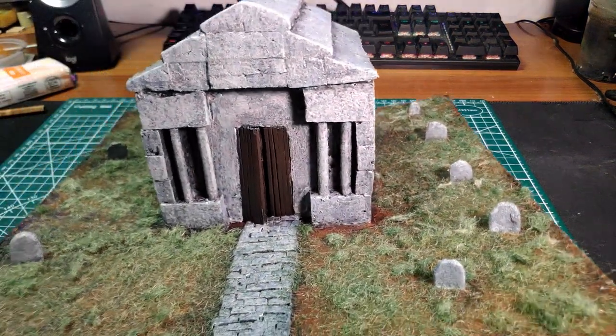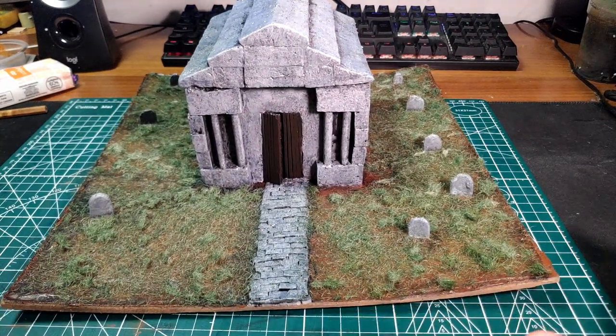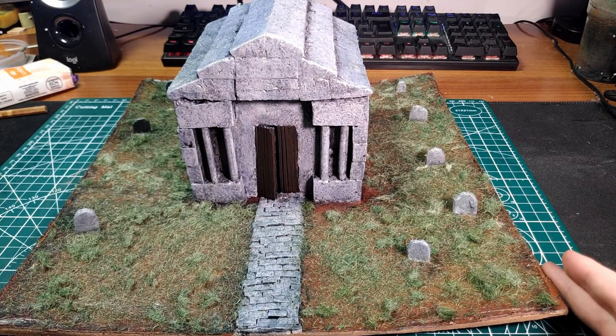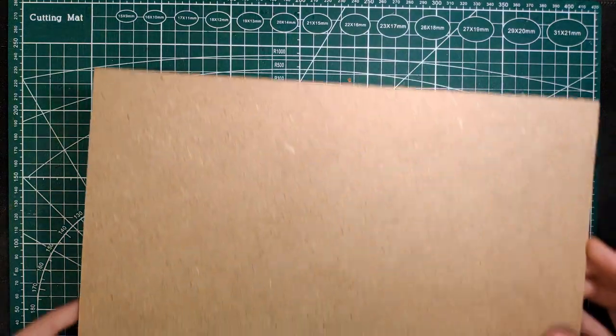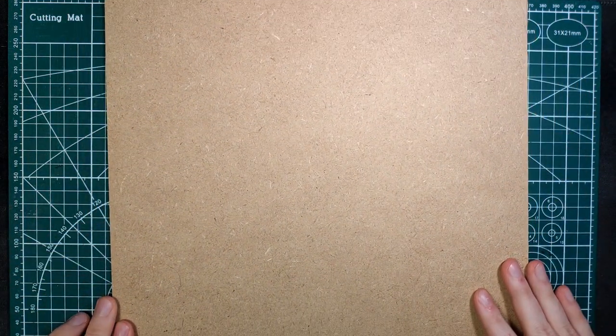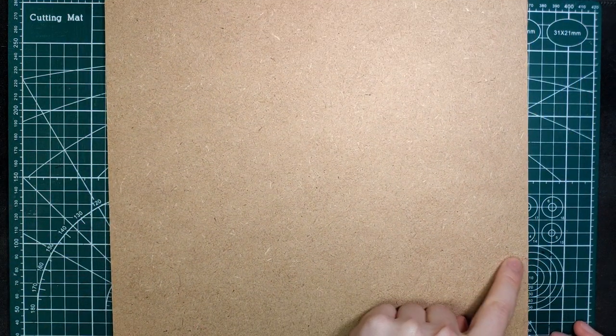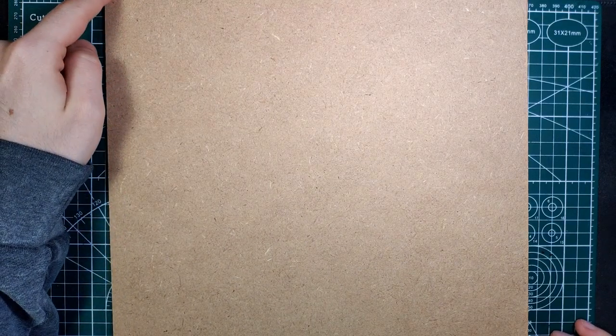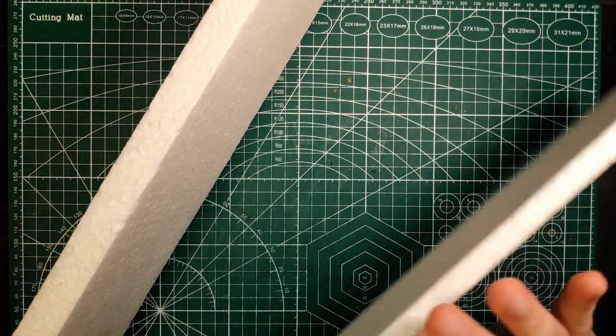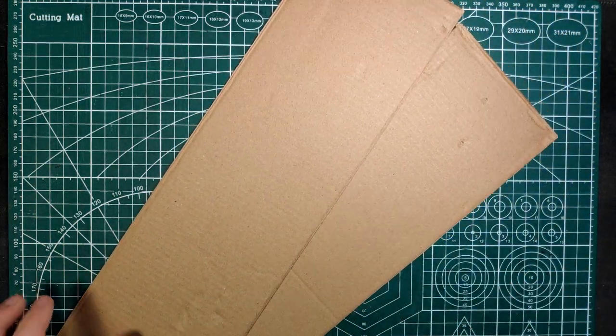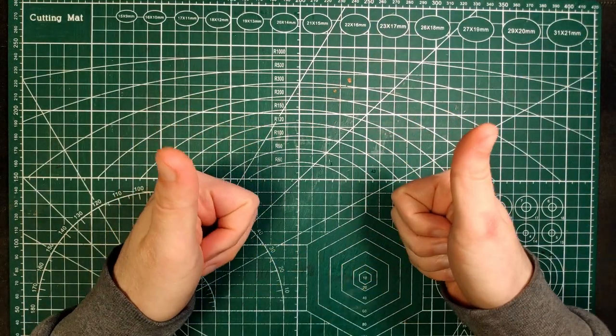In this video, I'm going to make a small mausoleum surrounded by a little graveyard, complete with some gravestones and a path that leads to it. All we need to make this is something for the base, I'm using a 30x30cm piece of MDF, some styrofoam for the different bricks, and some cardboard for the base structure. Let's get to it.